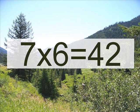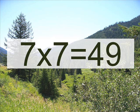Seven times six equals? Forty-two. Seven times six equals? Forty-two. Seven times seven equals? Forty-nine. Seven times seven equals? Forty-nine.